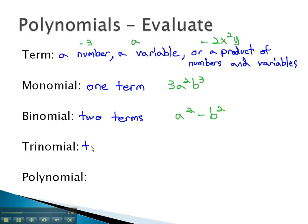A trinomial, the prefix tri meaning 3, has three terms. An example of a trinomial would be ax squared plus bx plus c.